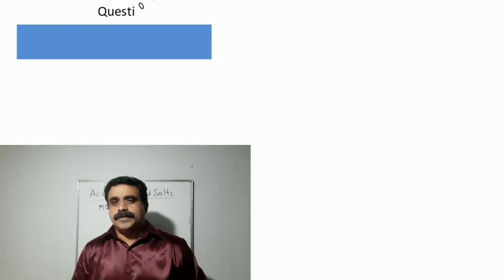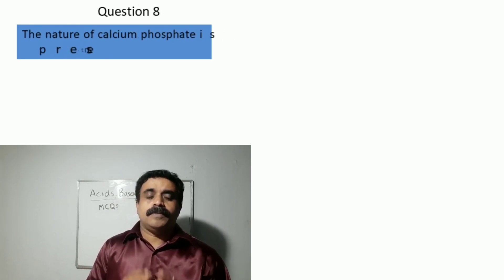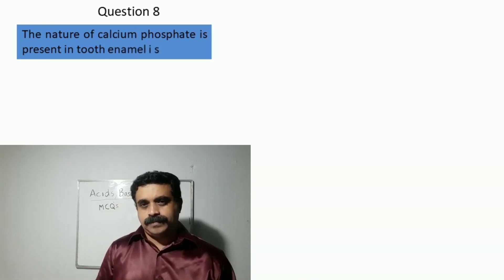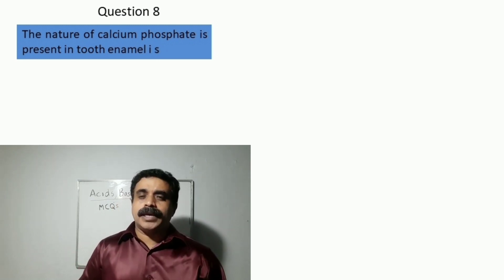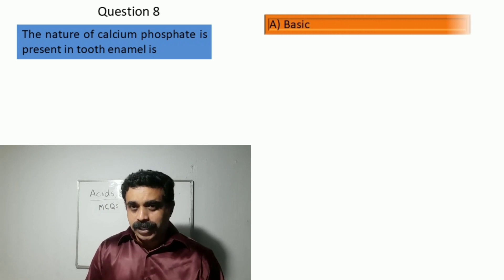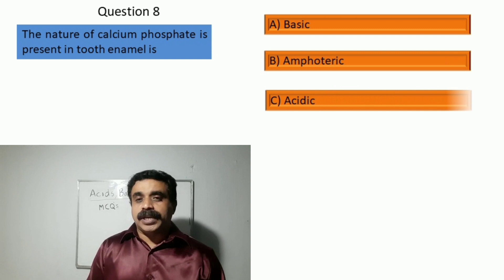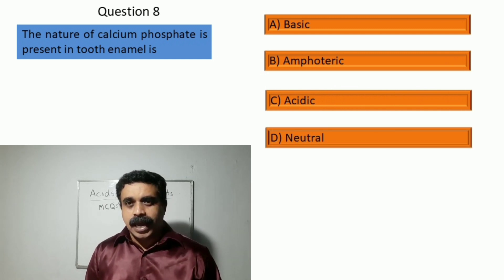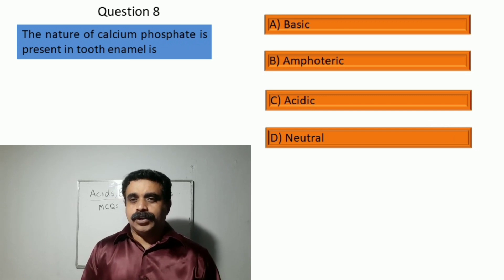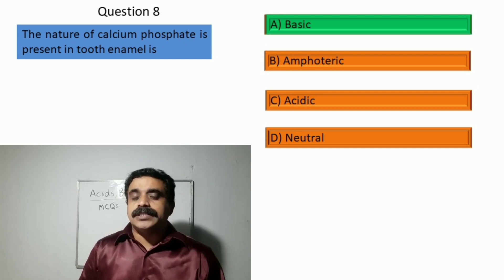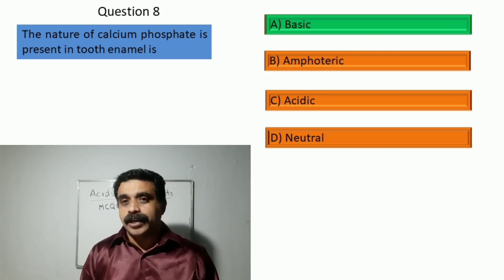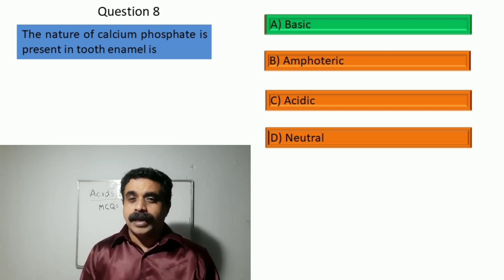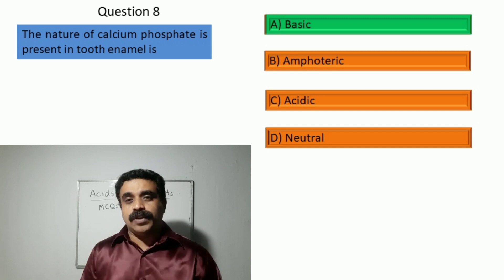Question number eight: the nature of calcium phosphate present in tooth enamel is — option A: basic in nature, option B: amphoteric, option C: acidic, option D: neutral. The correct answer is option A, basic in nature, because calcium phosphate is produced from phosphoric acid (a weak acid) and calcium hydroxide (a strong base), so the nature will be basic.